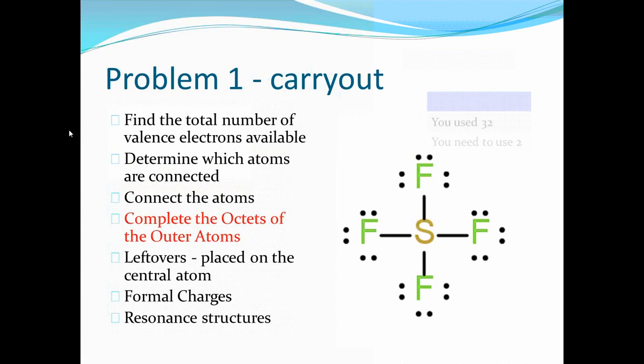Now completing the octets for each fluorine atom would make the total number of used electrons 32.